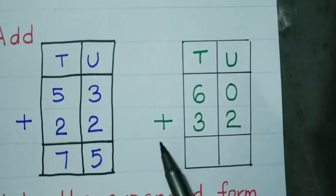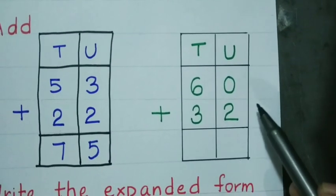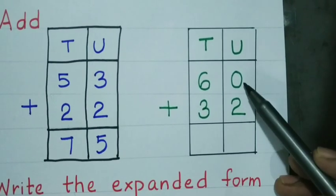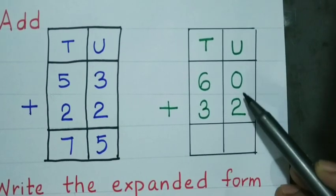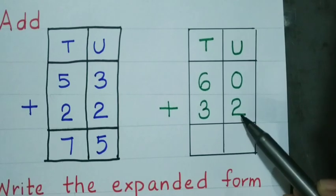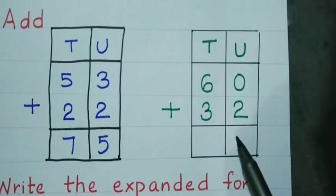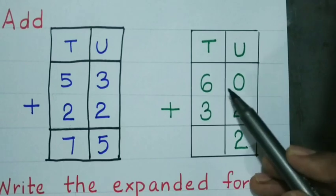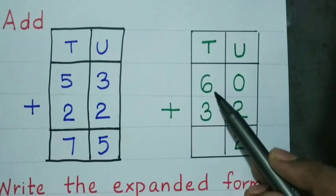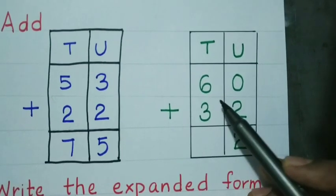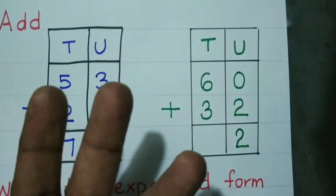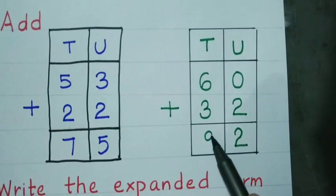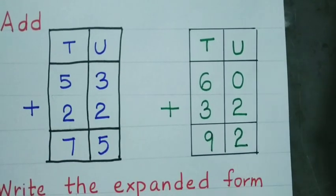60 plus 32. Start with the units place: 0 plus 2 — any number added to 0 gives the same number, so 2 units. Tens: 6 tens plus 3 tens — keep 6 in mind: 7 tens, 8 tens, 9 tens. So 92 is the answer.